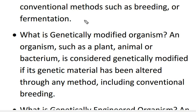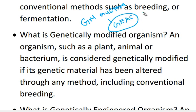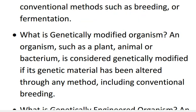The Indian government is planning to introduce genetically modified mustard and has formed a committee to assess the pros and cons of introducing it. Many environmental organizations are opposing this introduction. Genetically modified organism means it may be a plant, an animal, or a bacterium.